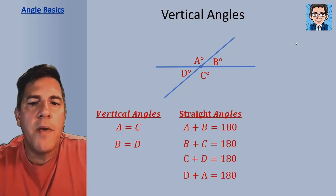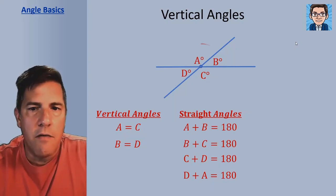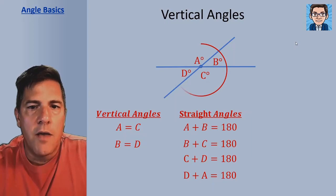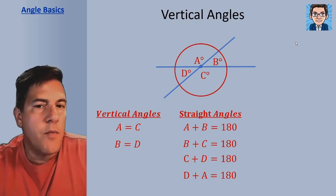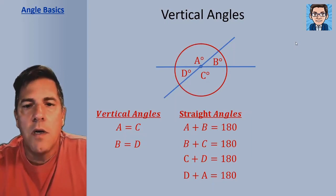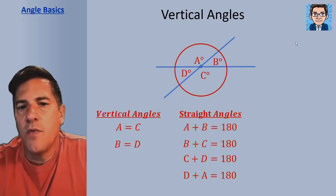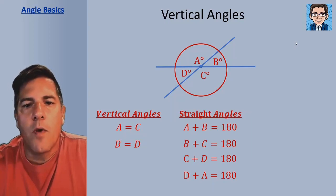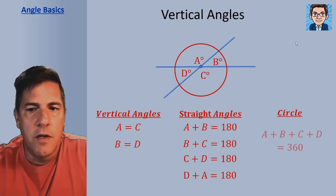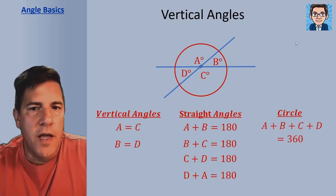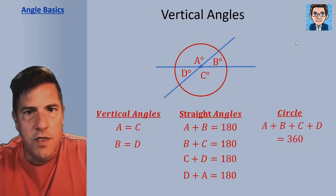And if we look at A, B, C, and D all together, it forms a circle. So when we've got four — or any number of angles — that form a circle, we're going to have 360 degrees in all of those angles when we add them together.